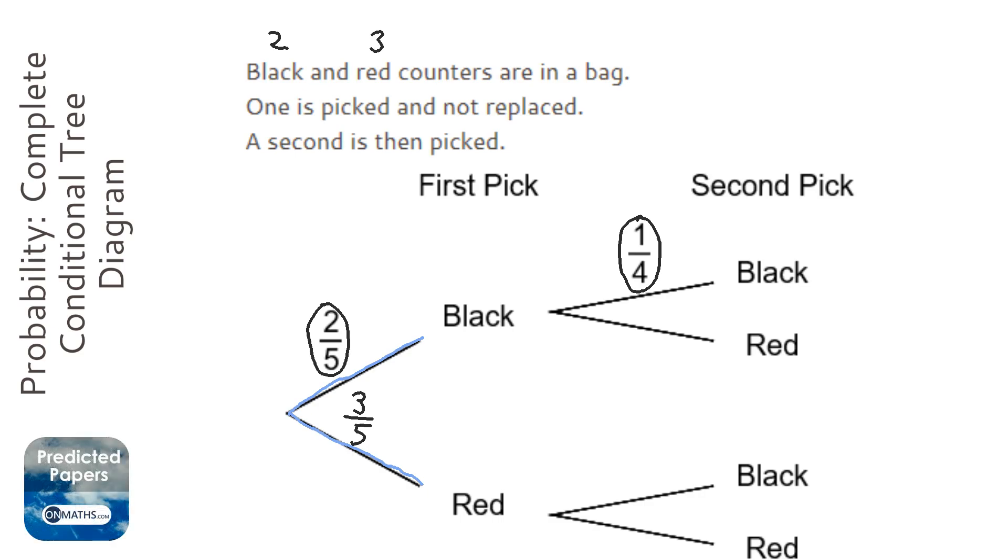The second pick is quite easy to find for red, because if it's a quarter black, then looking at this one here it has to be the remaining three quarters, because each of the shoots have to add up to one.